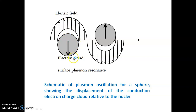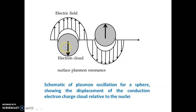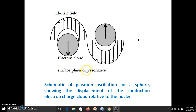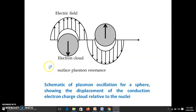The electric field vector of incident light drives the electron cloud into vibration. When the frequency of incident light matches the natural frequency of the electron cloud, it vibrates with maximum amplitude — this is called surface plasmon resonance, and at this condition maximum absorption occurs. This natural frequency depends on the size of the nanoparticle, so as we change the size, the natural frequency changes and the absorption frequency also changes.